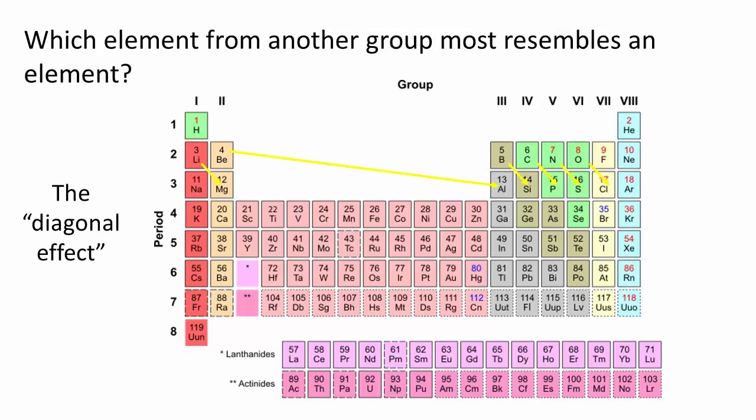Also, if asked which element from another group most resembles an element, it is the one to the right and one column down. We call this the diagonal effect and it arises from the fact that these atoms tend to have similar charge-to-radius ratios.